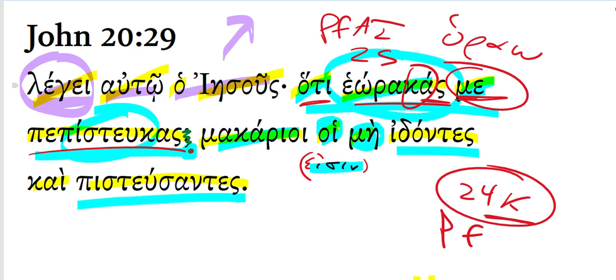The first participle's negated with may. And so Jesus said, blessed are those who did not see, who have not seen, and yet have come to believe.